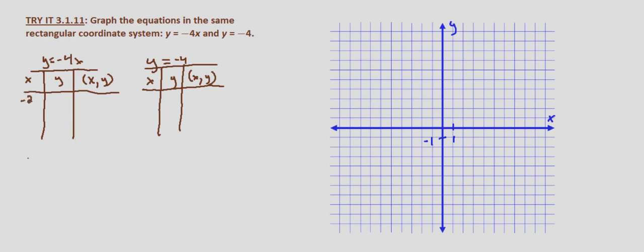At x equals negative 2, we have y equals negative 4 times negative 2, which equals 8. So we'll have a point at negative 2, 8 in the second quadrant.